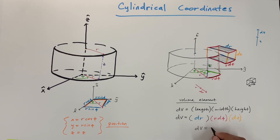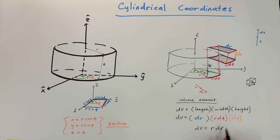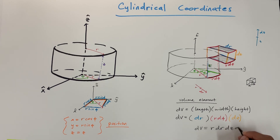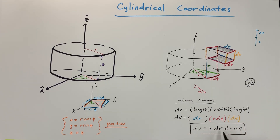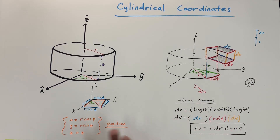So it's clear to see that our volume element for a cylinder is r dr dΦ dZ — we just move the r next to dr since they're all multiplying. We can rearrange these however we want; I just like to write r dr together. That's how you find the differential volume element and position coordinates for a cylinder.